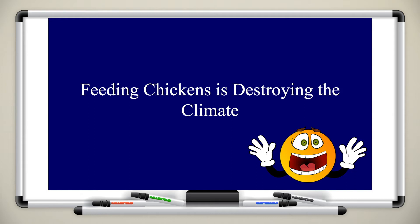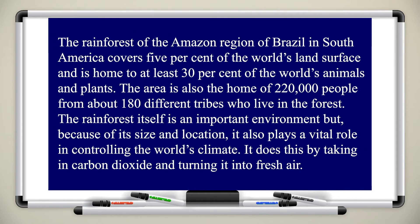The title of the text we're going to read is 'Feeding Chickens is Destroying the Climate.' The rainforests of the Amazon region of Brazil in South America cover five percent of the world's land surface and are home to at least 30 percent of the world's animals and plants. The area is also home to 220,000 people from about 180 different tribes who live in the forest. The rainforest plays a vital role in controlling the world's climate.